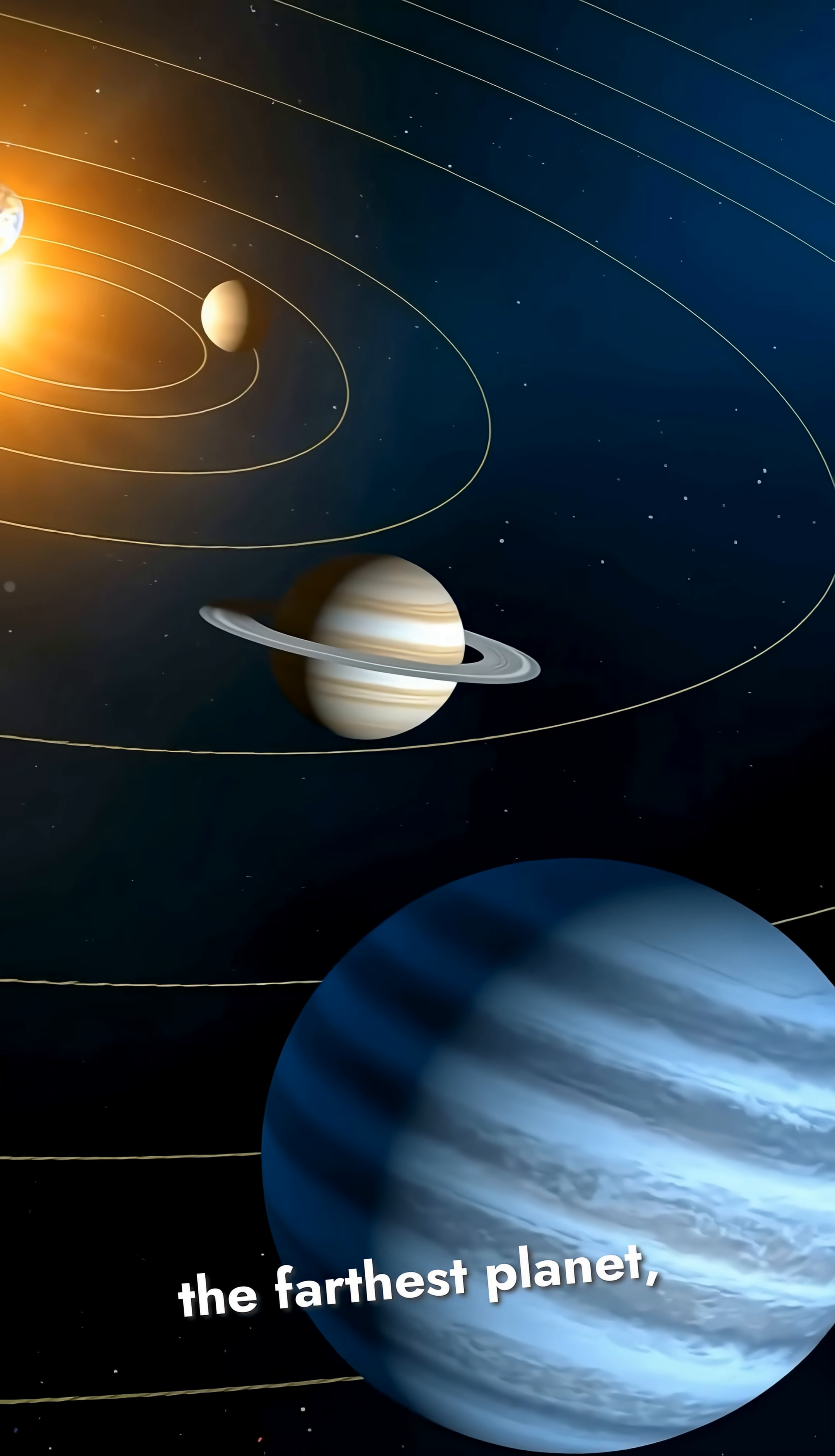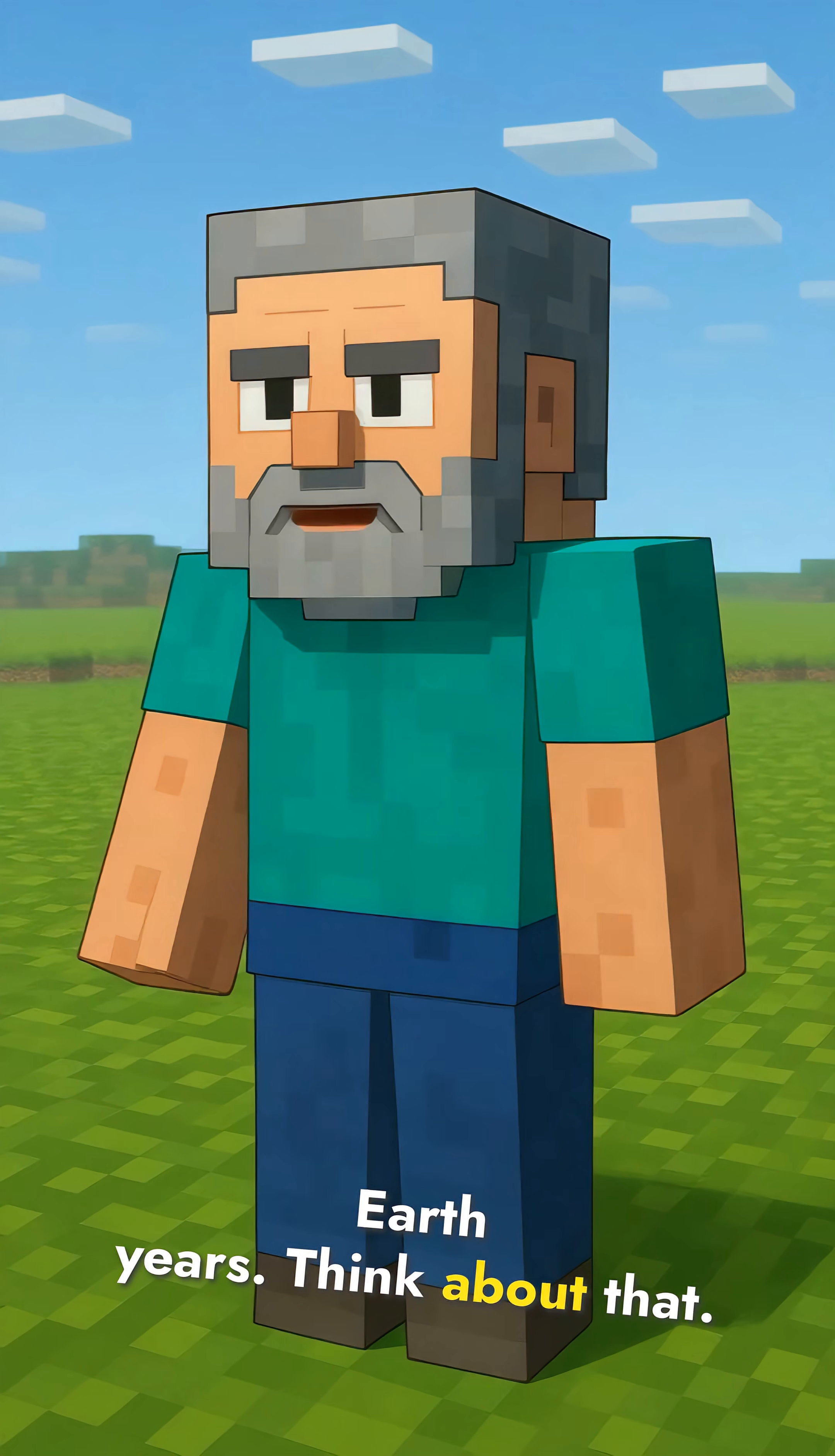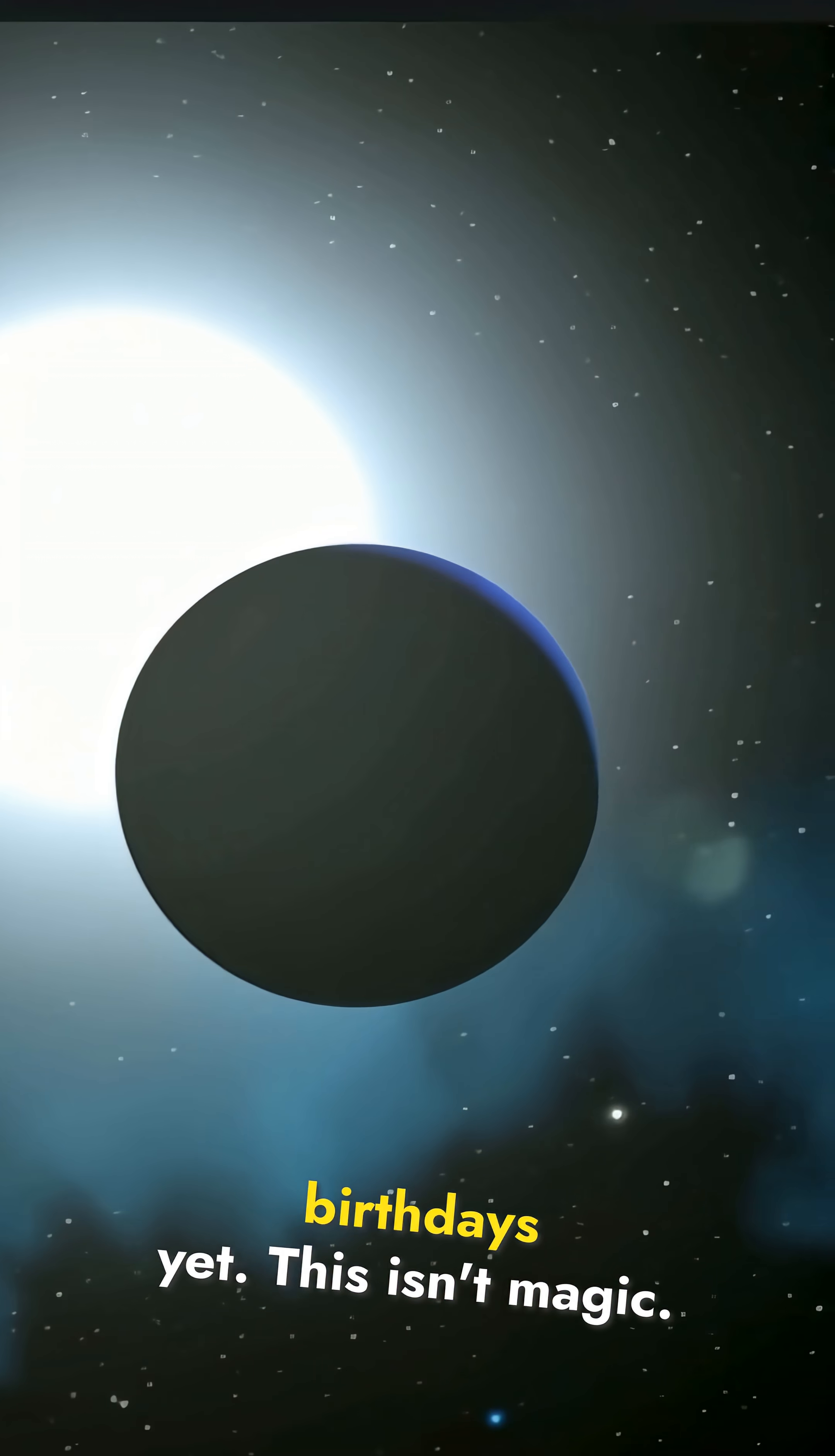But travel to Neptune, the farthest planet, and one single year lasts 165 Earth years. Think about that. If you were born on Neptune when it was discovered in 1846, it still hasn't completed two full orbits. Neptune hasn't even had two birthdays yet.